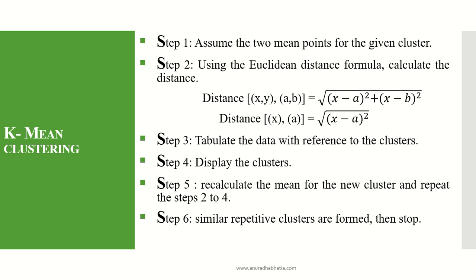These are the six simple steps which need to be followed. Assume the two mean points for a given cluster. We say two mean points because for a single data set we need to create two clusters. If the answer asks for three clusters, then we have to assume three mean points.